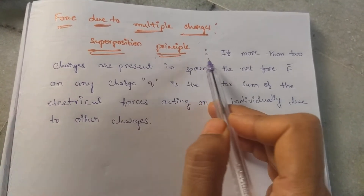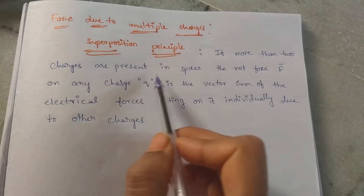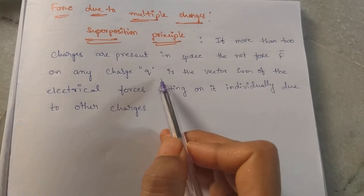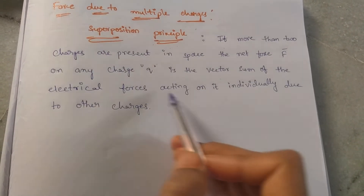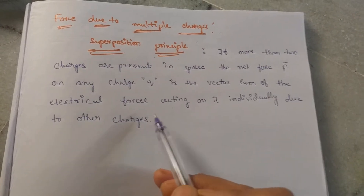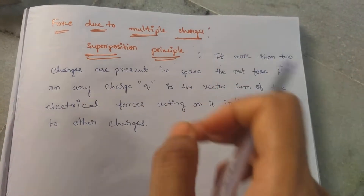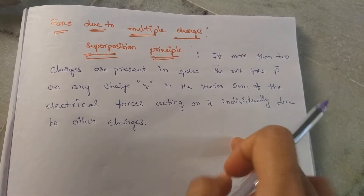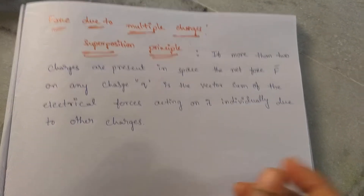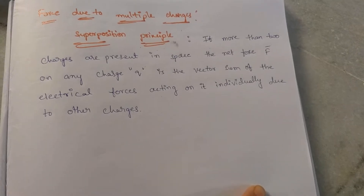What is the superposition principle statement? If more than two charges are present in a space, then the net force acting on any charge is the vector sum of electrical forces acting on it individually due to the other charges. Meaning, if a number of charges are present in a given place, then the net force acting on any one charge is the vector sum of electrical forces acting on it individually.